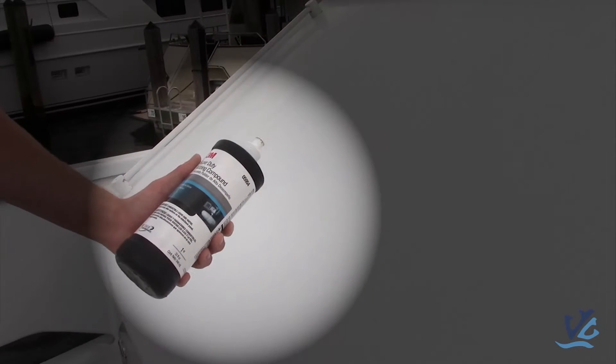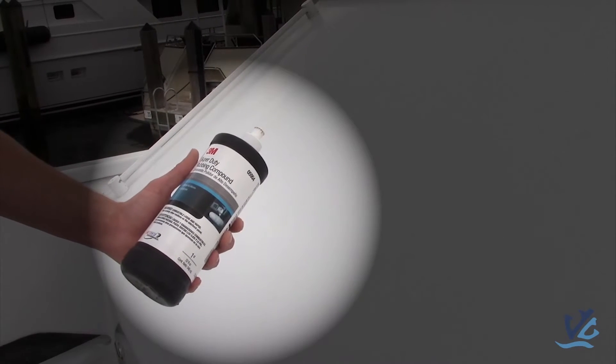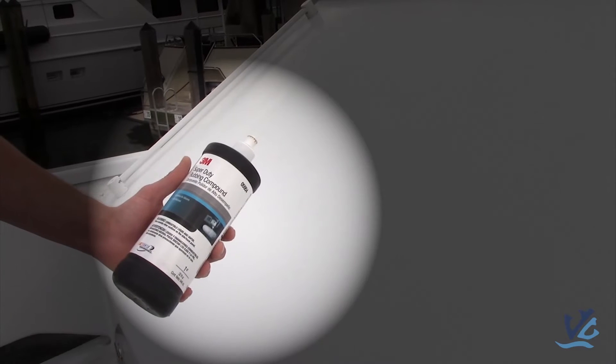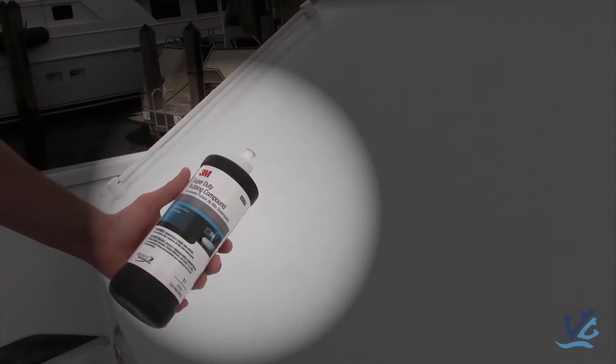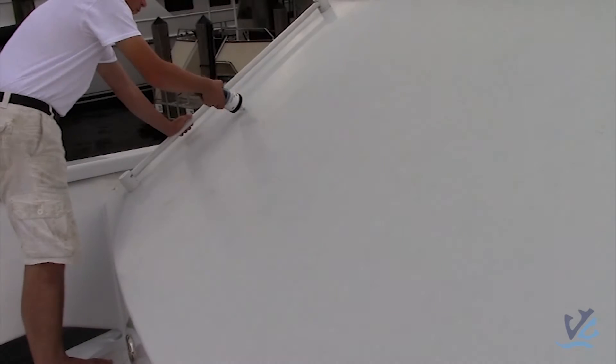You want to apply some compound. In this video, we're using 3M Super Duty Compound, and this is going to take most of the oxidation out of the paint. Apply the compound to the desired area you wish to buff.